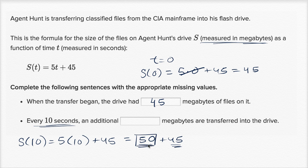And that's expected because as T increases one, this function goes up by five. So if T increases by 10, this is going to increase by 50. So for every 10 seconds, you would have 50 megabytes are transferred in the drive.